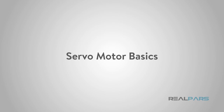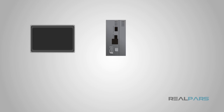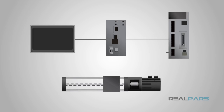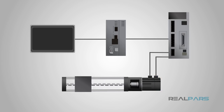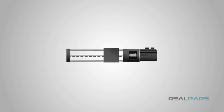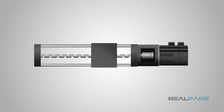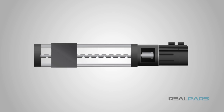Let's begin with the servo motor basics. Servo motors are part of a closed-loop system and are comprised of several parts, namely a control circuit, servo motor, shaft, amplifier, and either an encoder or resolver. A servo motor is a self-contained electrical device that rotates parts of a machine with high efficiency and with great precision. The output shaft of this motor can be moved to a particular angle, position, and velocity that a regular motor does not have.